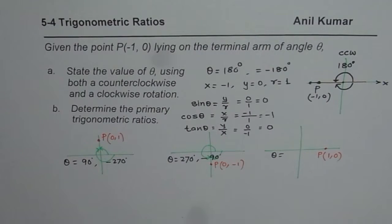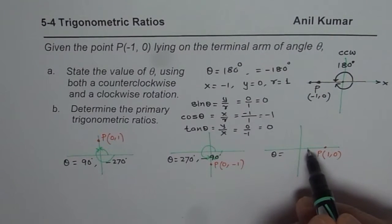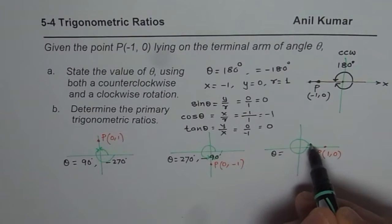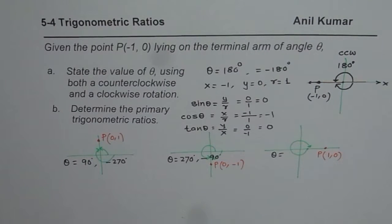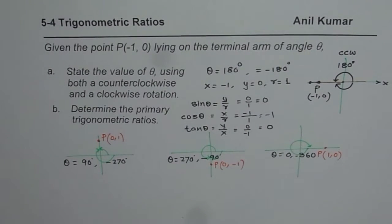And in the last case, angle is 0. If you go clockwise and even if you go counterclockwise, you could go like this here. You could write this as 0 or -360 degrees.